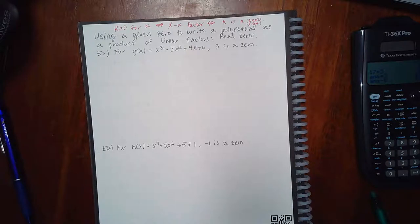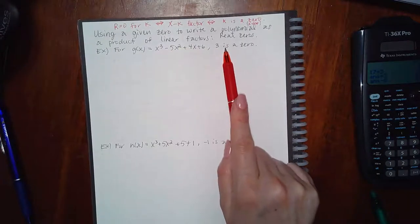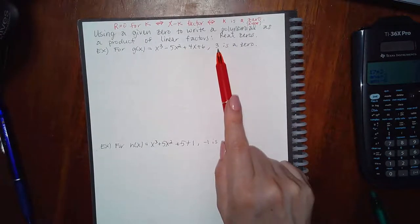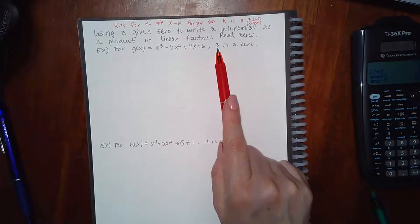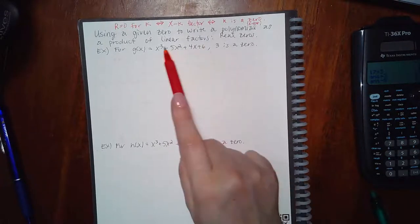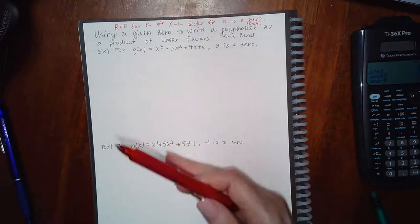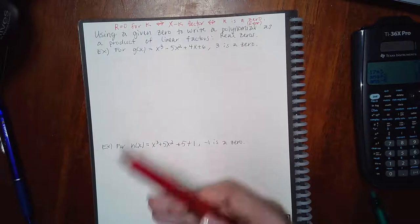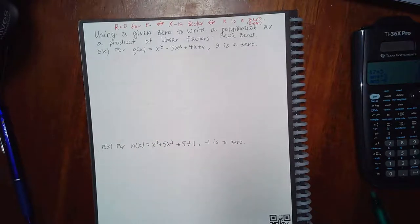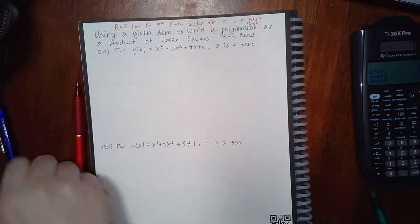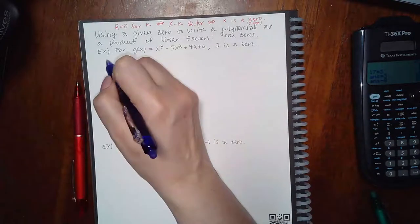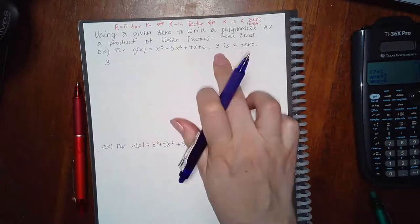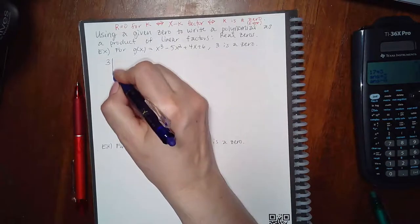Doing the synthetic division will cause the polynomial to shrink down and get partially factored, and then I can figure out how to factor it further. Let's go ahead and do the synthetic division for k = 3 — it's given as a number by itself, so that is the k value. If it were x − 3, I'd use the opposite sign.